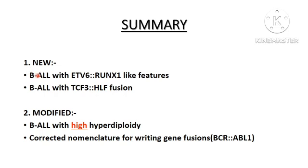To summarize, there are two new entities in the category of precursor B-cell neoplasms: BLL with ETV6::RUNX1-like features and BLL with TCF3::HLF fusion. The modified entities are BLL with BCR::ABL1-like features and BLL with high hyperdiploidy. The more important change is the corrected nomenclature for writing gene fusions — the standard format now uses double colons instead of a hyphen to separate fusion partners.